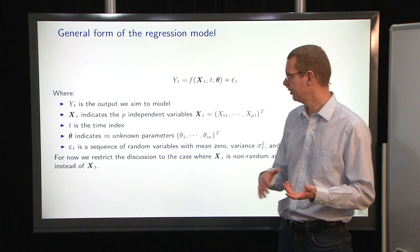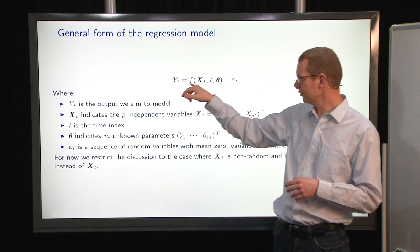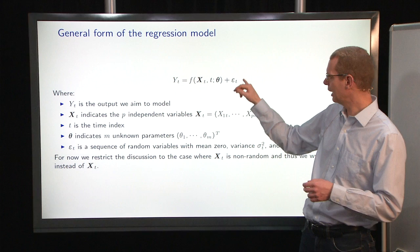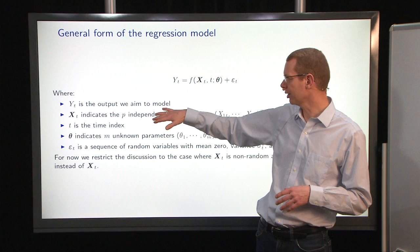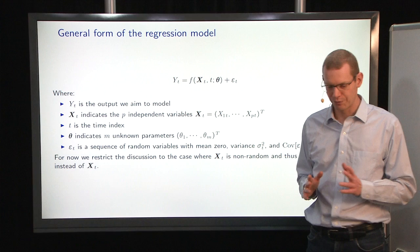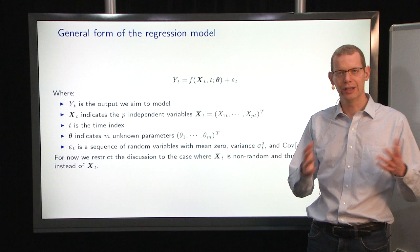The general form for a regression model, in a nonlinear setting as well, is to say that we have some observations. They are a function of some inputs, time potentially, and some parameters, plus we have some observation noise. What we aim to do is to model the output using all the information that we have. In practice, you can have the input being stochastic variables as well. We looked at that to some extent last week.